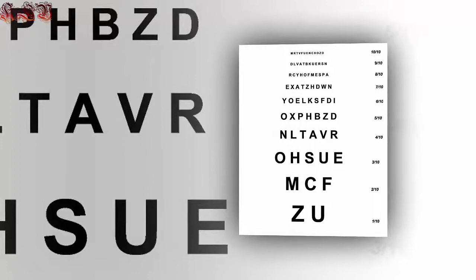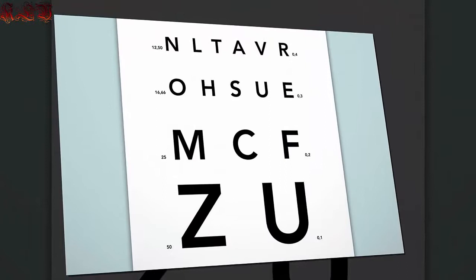Ferdinand Monoyer is one of the more obscure Google Doodle picks, although the majority of people will have encountered his inventions at some point in their lives.